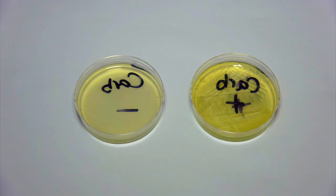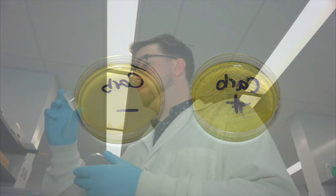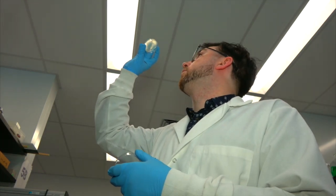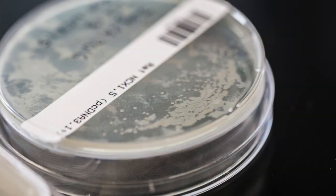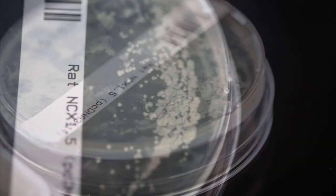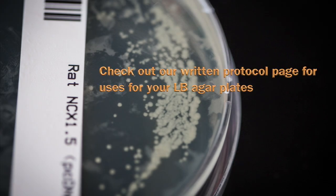If only the resistant strain grows, our plates are ready for use or storage at 4 degrees Celsius. Isolating individual colonies on plates is a crucial step in many experiments because colonies arise from single bacteria and are considered isogenic.